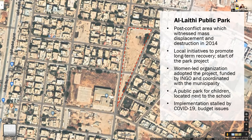I'm going to share two examples of participation which I thought were quite successful — one was led from a municipality point of view and one from a civil society project. The first is a project for a public park in the neighborhood of Alethi in Benghazi. Benghazi is the second largest city in Libya, and many neighborhoods witnessed widespread destruction during the war of 2014. There were many projects to try to reconstruct the area and encourage people to move back.